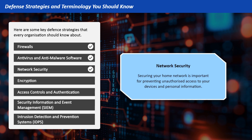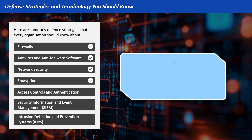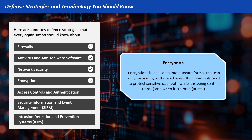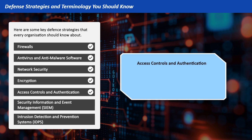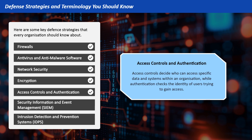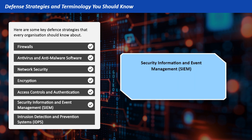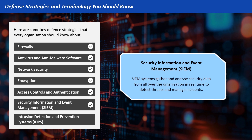Network security: securing your home network is important for preventing unauthorized access to your devices and personal information. Encryption changes data into a secure format that can only be read by authorized users. It is commonly used to protect sensitive data both while it is being sent (in transit) and when it is stored (at rest). Access controls decide who can access specific data and systems within an organization, while authentication checks the identity of users trying to gain access. Security Information and Event Management (SIEM) systems gather and analyze security data from all over the organization in real-time to detect threats and manage incidents.